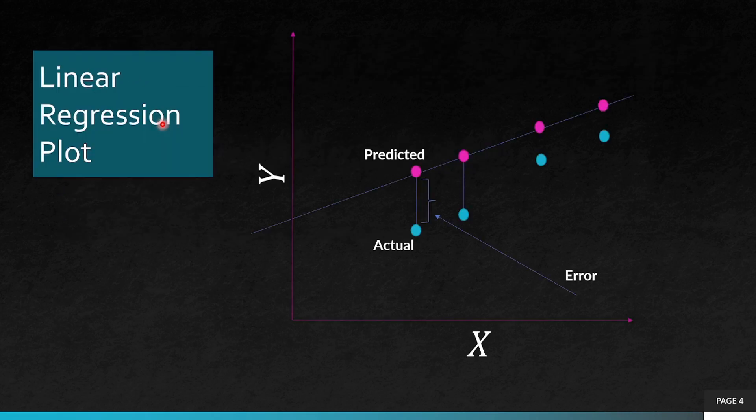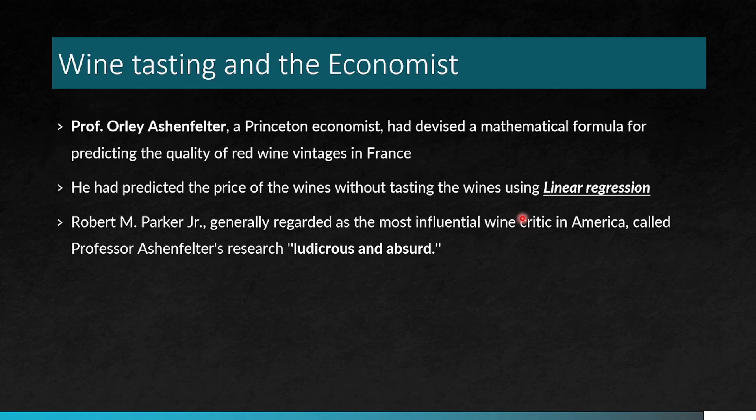So this is a plot, which is Y the predicted variable, and X is the predictor variable used to predict. This is a predicted line and you see these pink dots here are on the line, and this is the actual figure. The error is this portion, which is the difference between the predicted minus the actual.